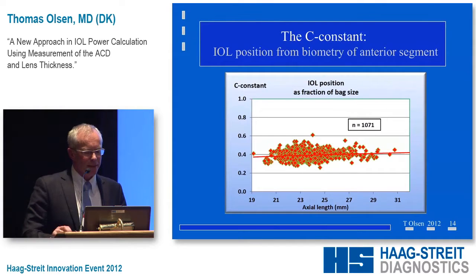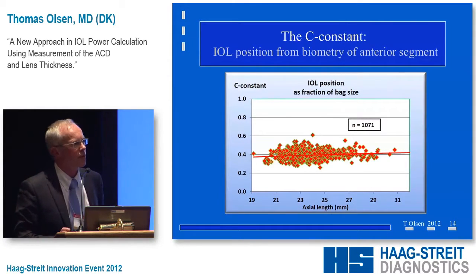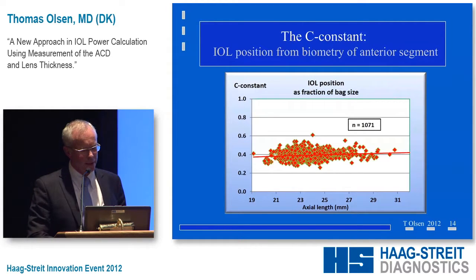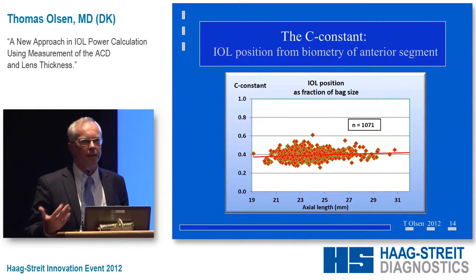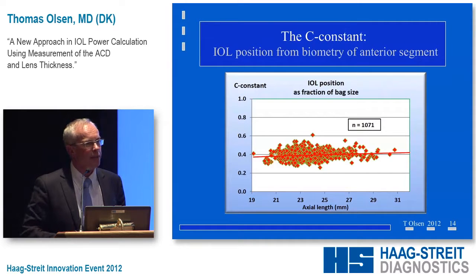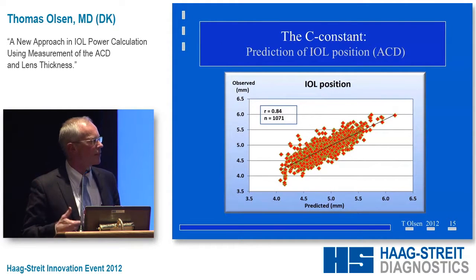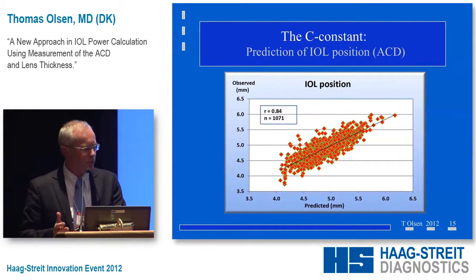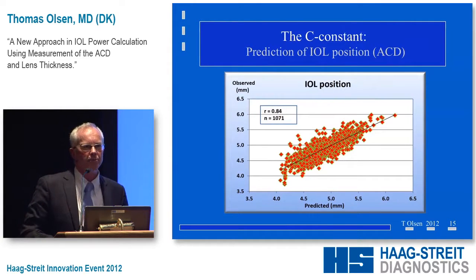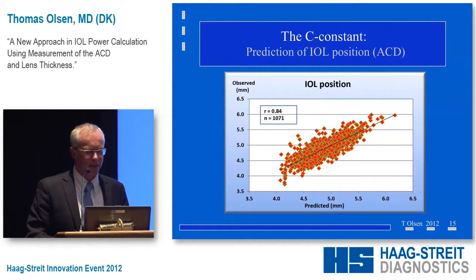If we do that in a series of cases — the C constant is shown here for the Acrysof type of lens — you can see the C constant is about 0.4. What is very important is that this constant is not changing over the axial length, meaning we do not have a bias with the axial length, so we don't need the axial length in our predictions. If we take the anterior chamber depth and the lens thickness pre-op and predict the post-op situation, we have a nice correlation coefficient of about 0.8 — the highest correlation I've ever seen in any series.